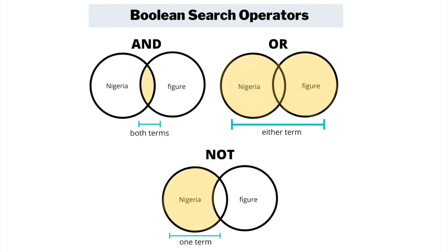NOT will narrow your results by avoiding unwanted terms. We normally don't use NOT unless we want to distinguish between two similar things. For example, let's say you want to look up a trumpet, but every time you search you get just as many results for a trombone. In this case, you could write trumpet NOT trombone, and the results should only show trumpets.